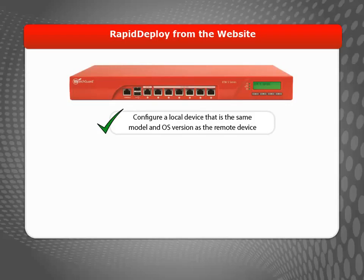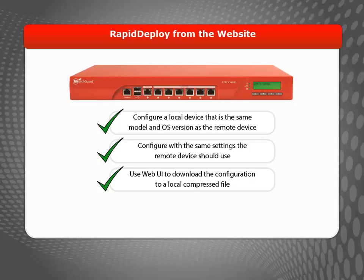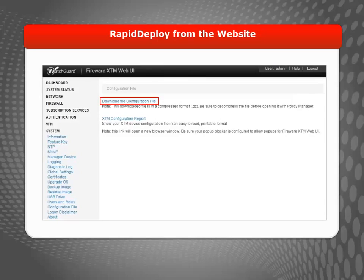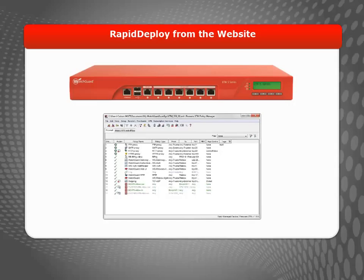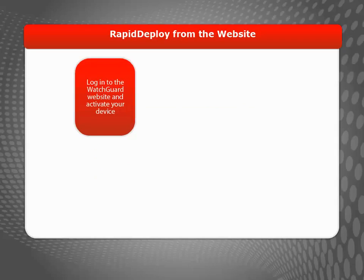Before you create the configuration file, check the product details page for the device you want to deploy and check which OS version it was manufactured with. The recommended method is to configure the local device, which must be the same model and run the same OS version as the remote device, with the settings you want the remote device to use. You can then use the Fireware XTM web UI to save the configuration to a local file. If you want to use Policy Manager to save a configuration file for the same device model, you can do that as well. With this method, you must use a Policy Manager version that is the same as or lower than the version of Fireware XTMOS installed on the device you want to configure remotely.